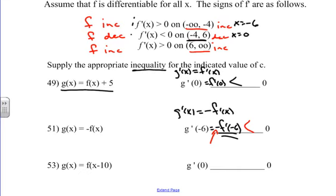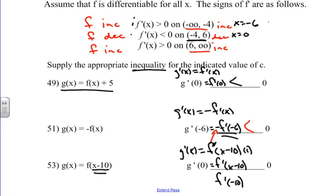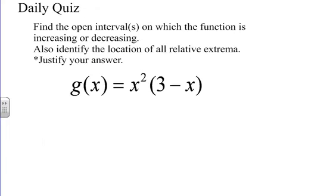For the last one, g of x equals f of x minus 10 — f of x is being shifted right 10 units. Using the chain rule, g prime of x equals f prime of x minus 10 times the derivative of the inside, which equals 1. So g prime of x equals f prime of x minus 10. Plugging in zero: g prime of zero equals f prime of negative 10. Since x equaling negative 10 falls in the interval where f prime is greater than zero, g prime of zero is greater than zero.